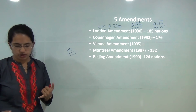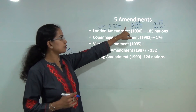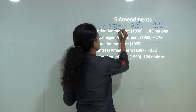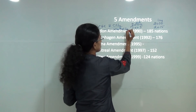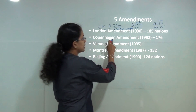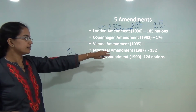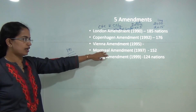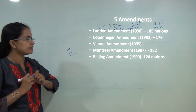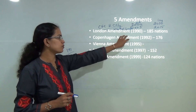Under the Copenhagen Amendment, methyl bromide was to be completely phased out by 1991, as this amendment came into force in 1992. The Montreal Amendment then focused on phasing out methyl bromide that was not addressed by the Copenhagen Amendment.